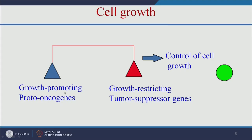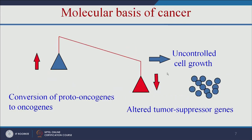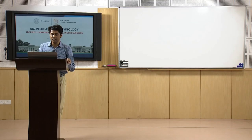Growth-promoting proto-oncogenes and growth-restricting tumour suppressor genes must be properly balanced for control of cell growth. If there is an imbalance, proto-oncogenes are converted to oncogenes and tumour suppressor genes are altered, leading to uncontrolled cell growth — that is called a tumour. If the tumour spreads from one location to another, that is called cancer, and the spreading is called metastasis.